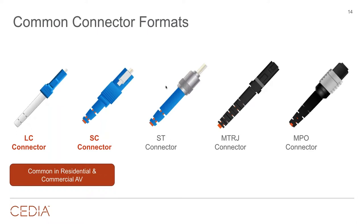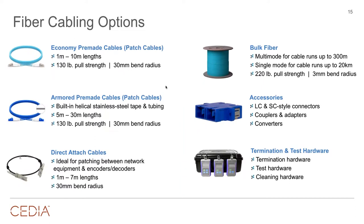Many people pull fiber for future proofing and leave it dark — no connectors — until they're ready to plug it into a device. They tie a knot in the end and leave it. But if you need to pick one connector, go LC. If you're going into an existing installation with ST, MTRJ, or MPO connectors, you can adapt them — adapters exist for all types, usually for two or three bucks.